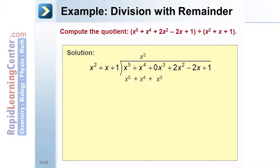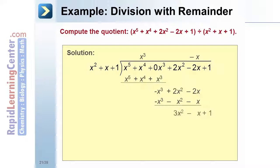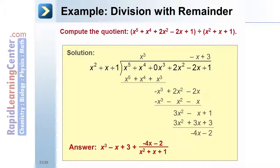Third, multiply the found quotient term x cubed by the divisor to get x to the fifth plus x to the fourth plus x cubed. Fourth, subtract the new found polynomial from the dividend and bring the next two terms of the dividend down to get negative x cubed plus 2x squared minus 2x. Fifth, repeat the process from step 2 until you reach the remainder of negative 4x minus 2. In the final answer, put the remainder over the divisor. The final quotient is x cubed minus x plus 3 plus quantity negative 4x minus 2 over quantity x squared plus x plus 1.